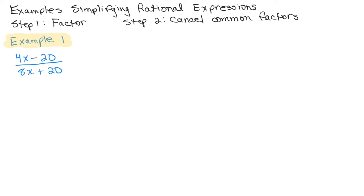So here's our first example and one thing to keep in mind is it is not factored. We have this entire expression 4X minus 20 and 8X plus 20. So we have to factor both of those.